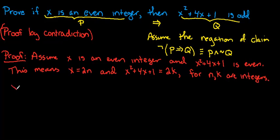So this means that x squared plus 4x plus 1 equals, plugging in for x, we've got a 2n squared plus a 4 times 2n plus 1. And let's work that out, that's the same as 4n squared plus 8n plus 1.